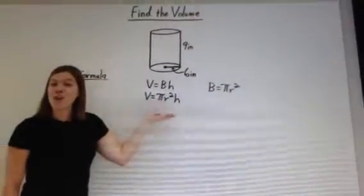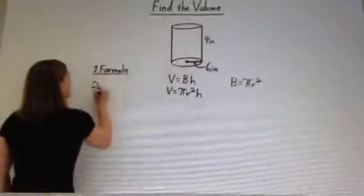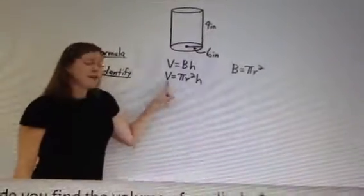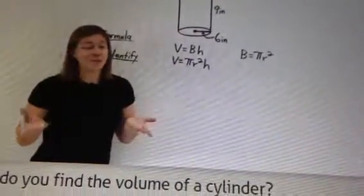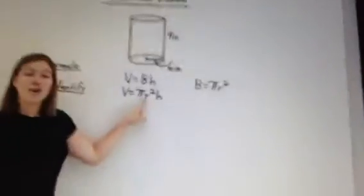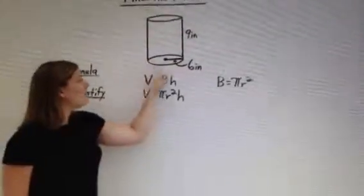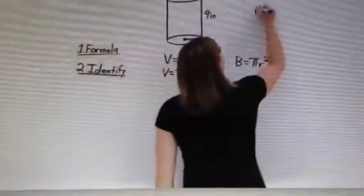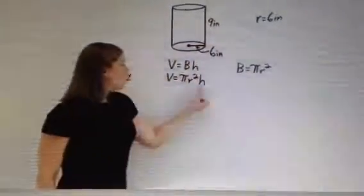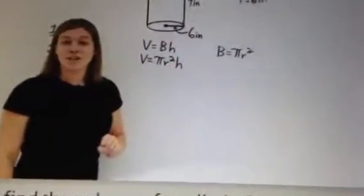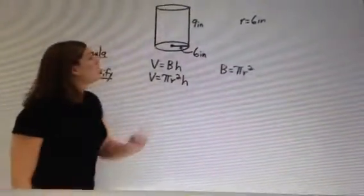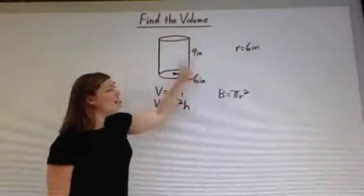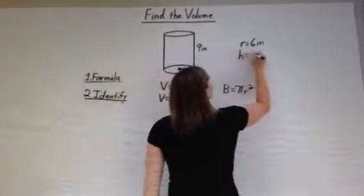We now have a formula to find the volume. Let's identify the variables in our cylinder. V is the volume — that's what we're solving for. The radius r is the line from the center to the edge of the circular base, which measures 6 inches. The height h is the distance between the two bases, which measures 9 inches. Pi will be approximated as 3.14.